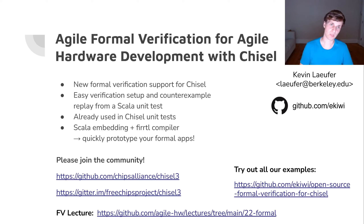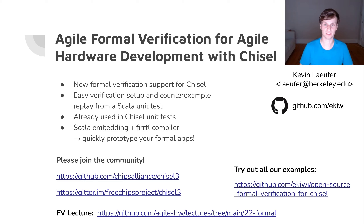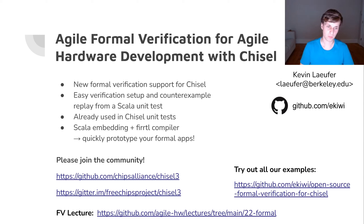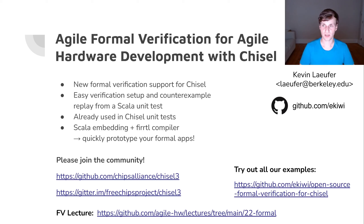So that was my talk on agile formal verification with chiseltest for Chisel. I introduced formal verification support for Chisel with easy setup and counterexamples replayable from a Scala unit test. It's already used in chisel3 standard library unit tests. With the Scala embedding and the FIRRTL compiler that's easily extended with compiler passes written in Scala, we could quickly prototype what the industry calls formal apps — applications more complicated than simple assertion checking. Feel free to join the Chisel community on GitHub or Gitter. I also did a lecture going into more detail on formal verification — the link is available — and all the examples are open source. I'm happy to take your questions. Thank you very much.